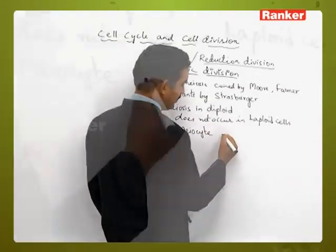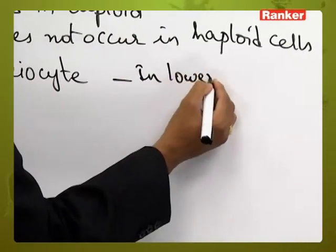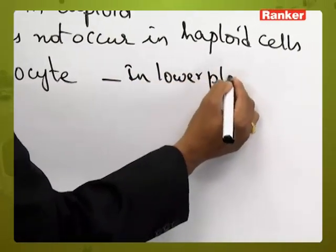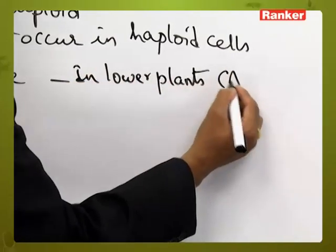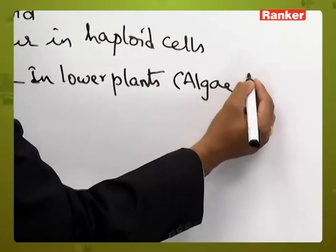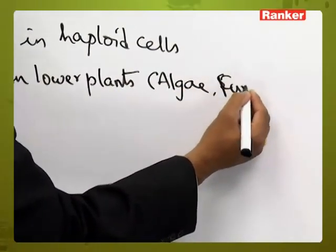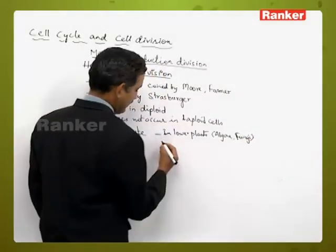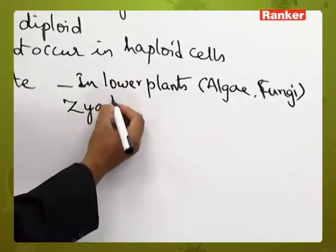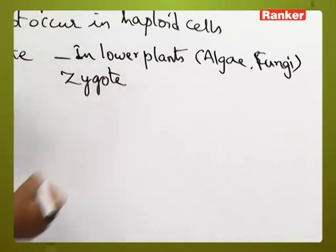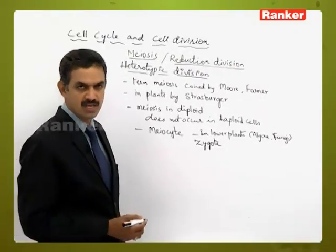Generally in lower plants, like in algae and in some fungi, the zygote is a meocyte, because the zygote will undergo meiosis, so we call it a meocyte.